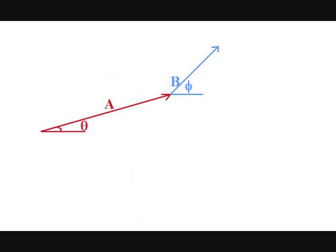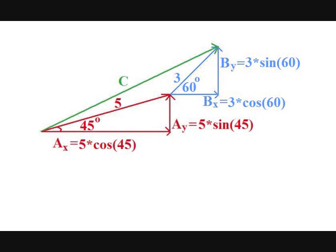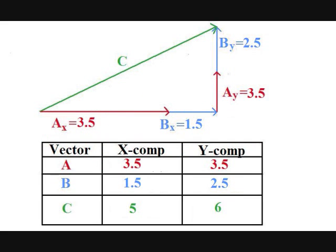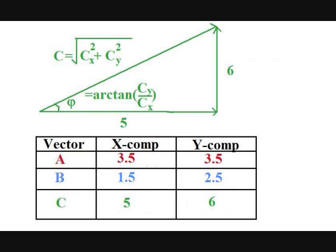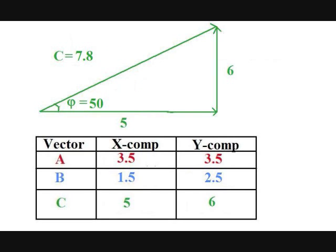Now I'll do that in an example with numbers. Let vector A have a magnitude of 5 directed along 45 degrees above the horizontal, and vector B have a magnitude of 3 directed along 60 degrees above the horizontal. To organize the information of the components, I'll use a table. A sub x is 5 cosine 45 equal to 3.5. B sub x is 3 cosine 60 equal to 1.5. C sub x is A sub x plus B sub x equal to 5. A sub y is 5 sine 45 equal to 3.5. B sub y is 3 sine 60 equal to 2.5. C sub y is A sub y plus B sub y equal to about 6. The magnitude of C is the square root of 5 squared plus 6 squared, equal to about 7.8. The direction is the inverse tangent of 6 over 5, which is about 50 degrees.